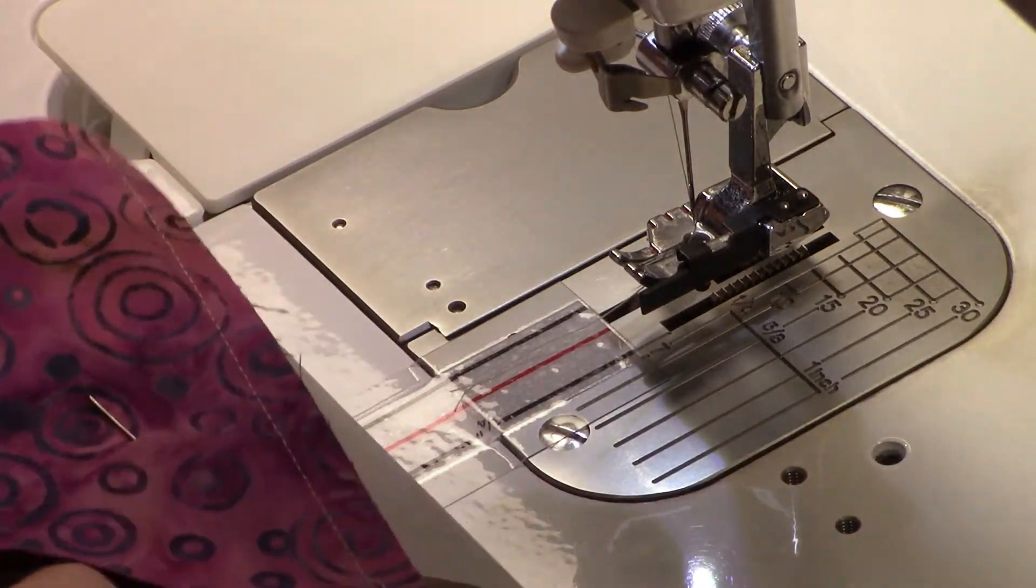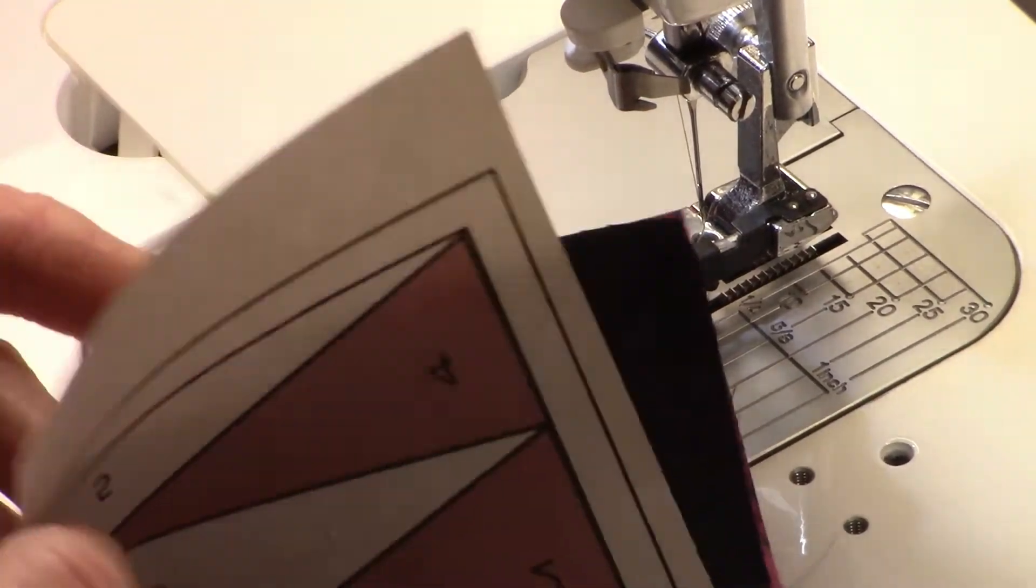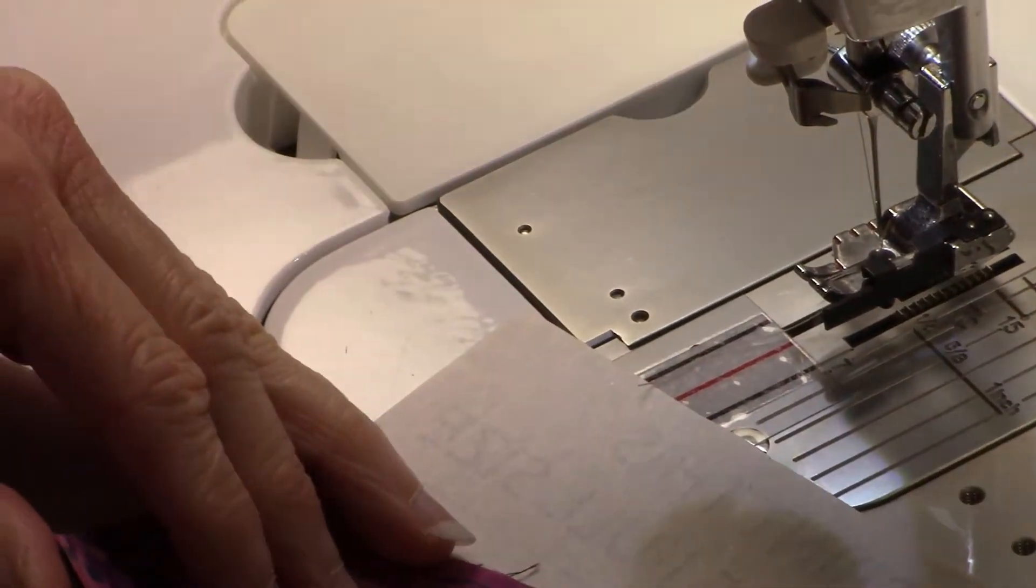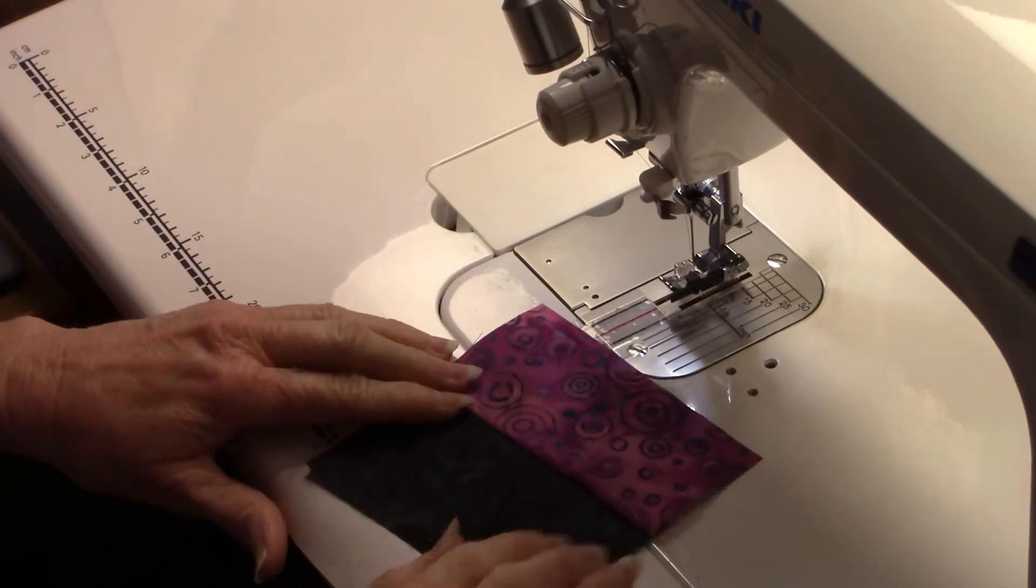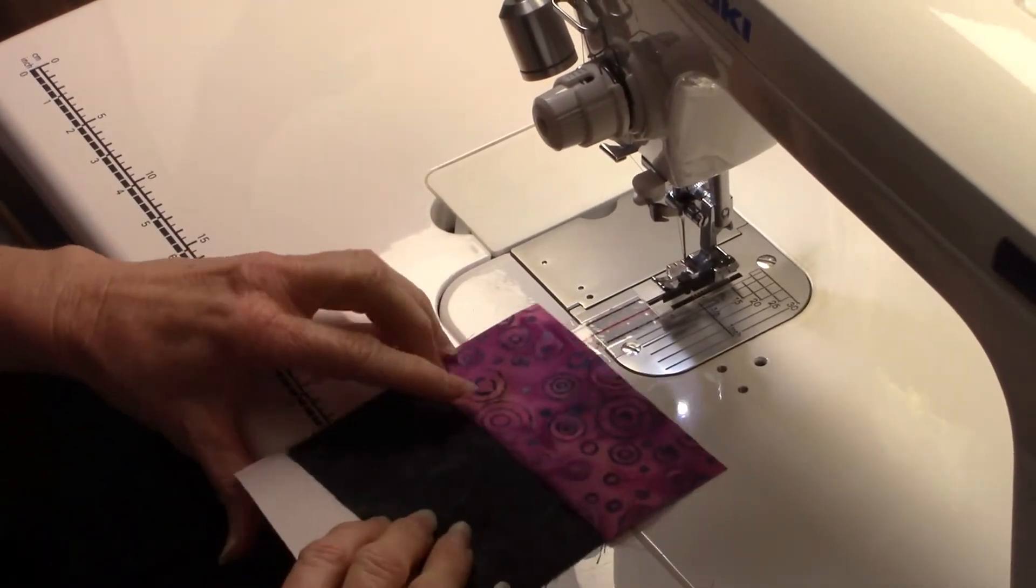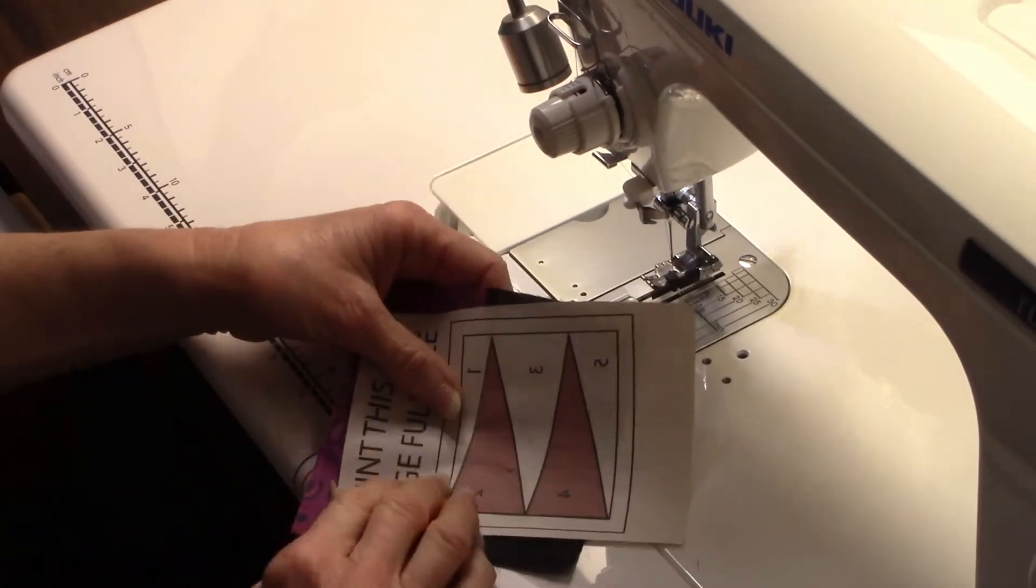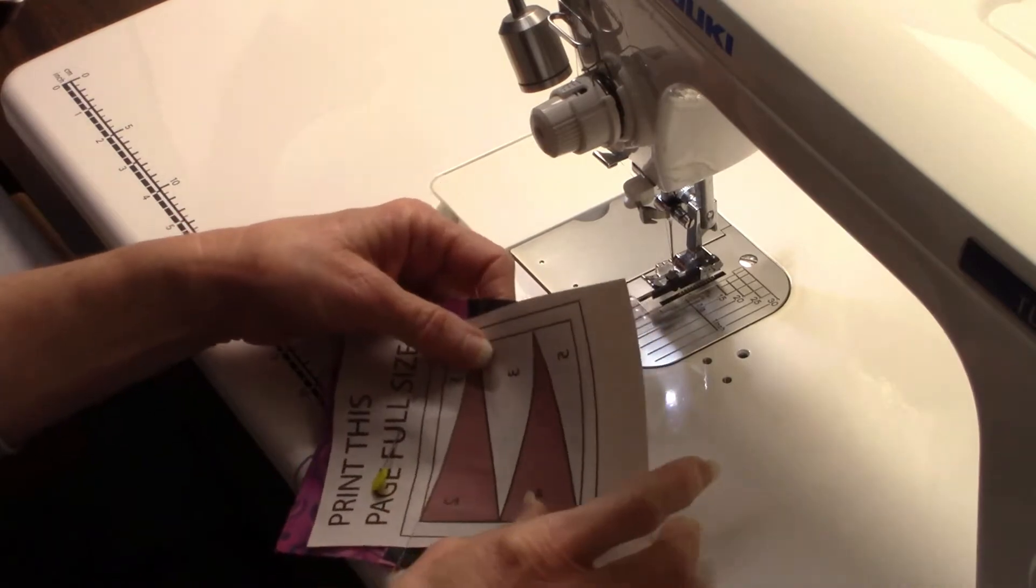Now what I'm going to do, so I'm going to unpin that, and I'm going to take it to my iron and I'm going to fold this one back and press it. I'll just finger press it there for now. And you could pin this if you're new to paper piecing, you can pin that so it holds it back.